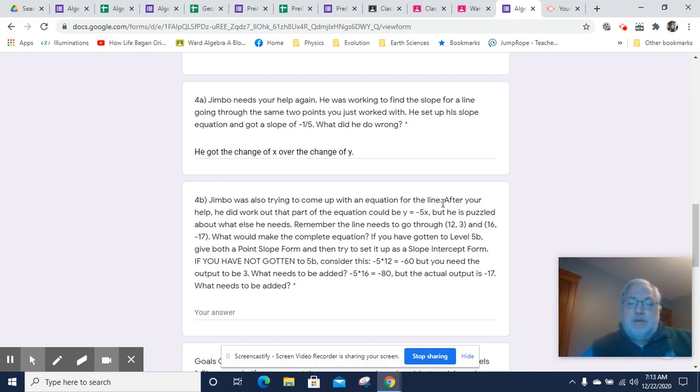Now, he's trying to come up with an equation for a line, and after your help, he worked out that the equation has this part. It could be y equals negative 5x. However, he also worked out that negative 5 times an x value of 12, which is one of our points, one of our x values, doesn't equal 3. It equals negative 60. So how am I going to get from negative 60 up to 3? Well, we could add 63. Let's test that out for the other one.